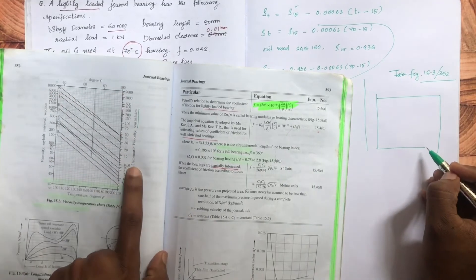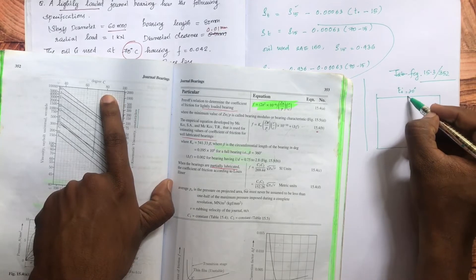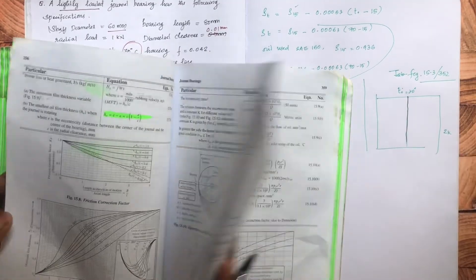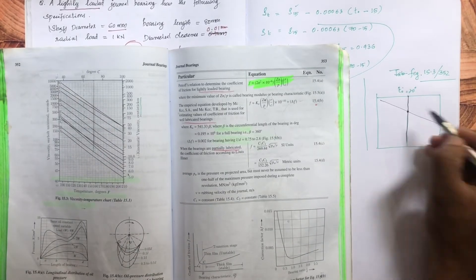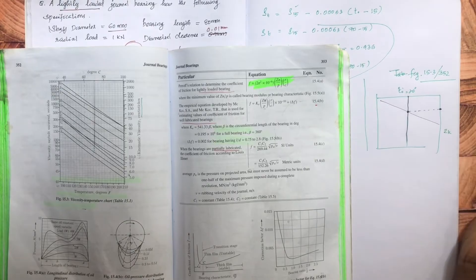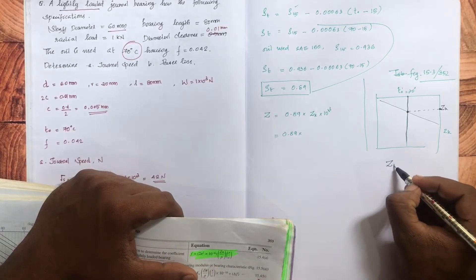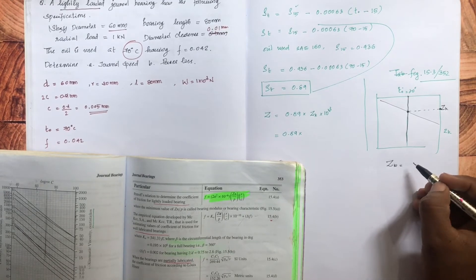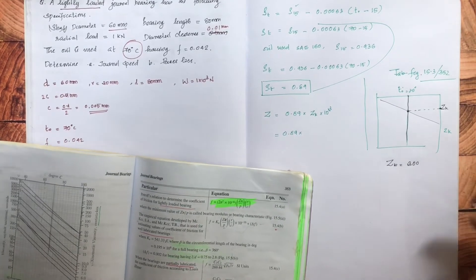Now we have the kinematic viscosity. Here the temperature T₀ is equal to 70°C. We will get the Zk value; let Zk be equal to 300.